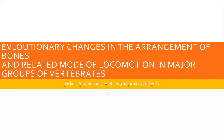Evolution کے mechanism نے fishes کا skeleton اور locomotion ایک طرح کا بنایا۔ جب amphibians evolve ہوئے تو ان کے skeleton اور locomotion میں modifications آئیں۔ پھر reptiles جب evolve ہوئے تو skeleton میں مزید evolution ہوئی اور mode of locomotion میں بھی changes آئیں۔ یہی سلسلہ birds تک جاری رہا۔